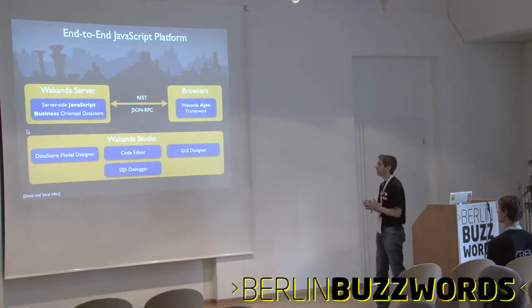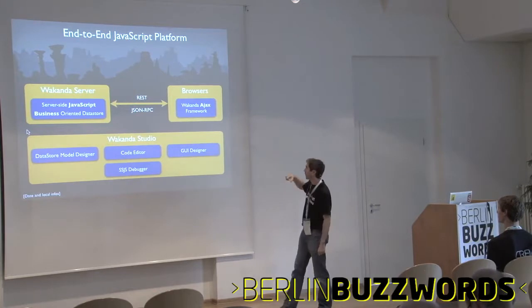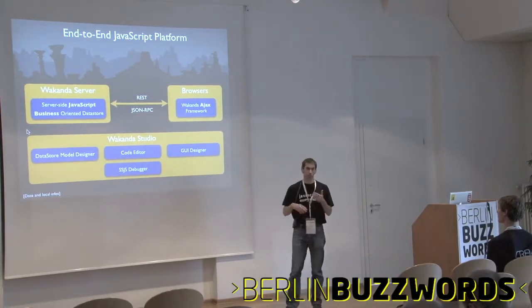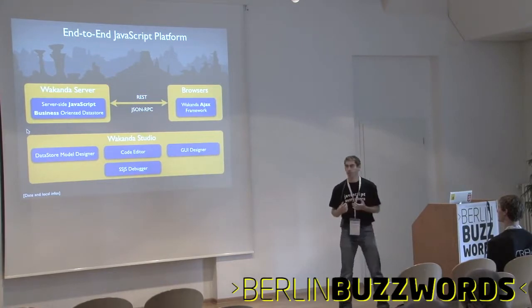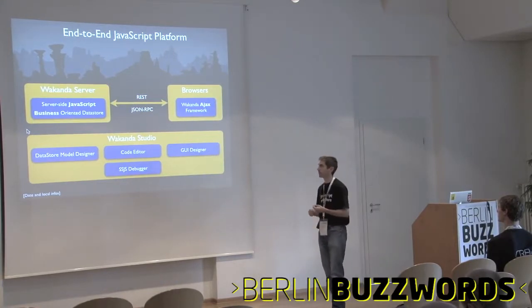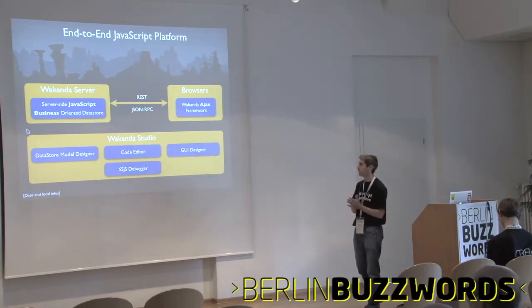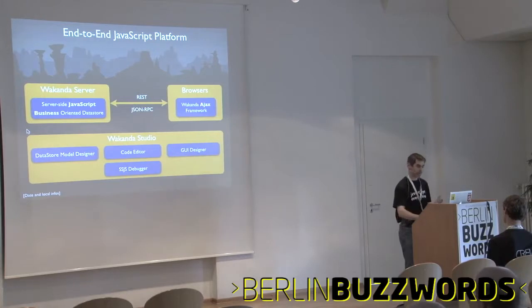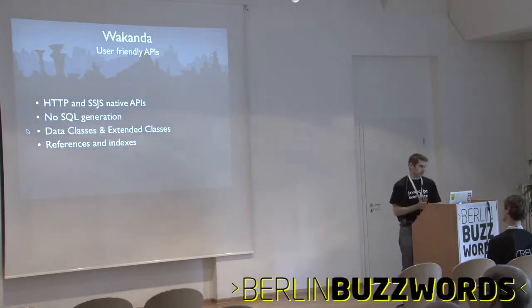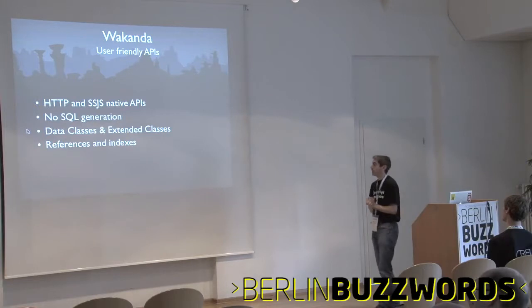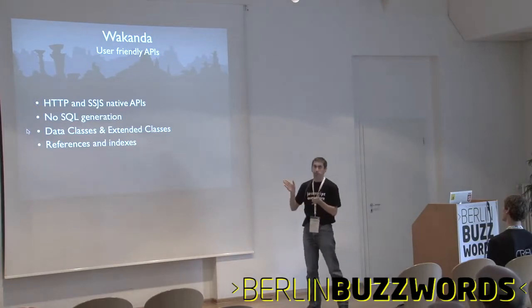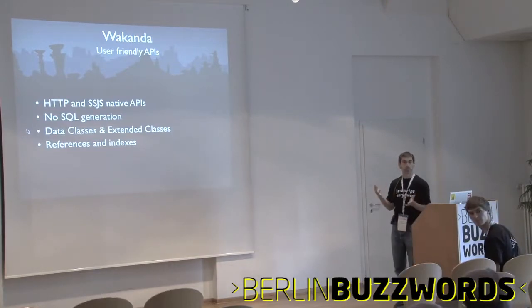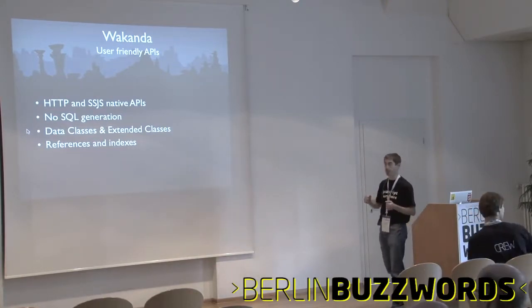Wakanda is a full platform. There is a server, there is an Ajax framework, and there is a studio to help you create your application. On the server, you will have server-side JavaScript from JavaScript Core, from WebKit, and a business-oriented datastore, more object-like. So user-friendly API. We have an HTTP API, so we can just request the database directly from HTTP, which is best for the Ajax framework, which is what it's doing.